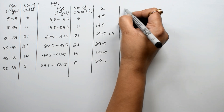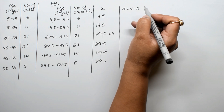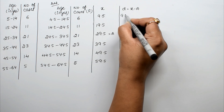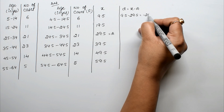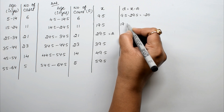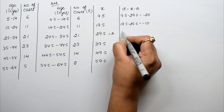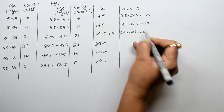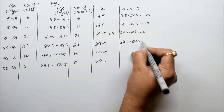We compute d = x − a, where a = 29.5. Since no method is specified, we use the step deviation method. The deviations are: 9.5 − 29.5 = −20, 19.5 − 29.5 = −10, 29.5 − 29.5 = 0, 39.5 − 29.5 = +10, and 49.5 − 29.5 = +20, 59.5 − 29.5 = +30.